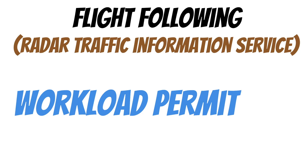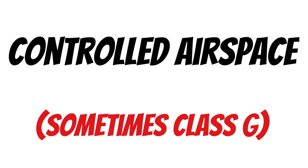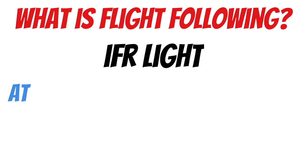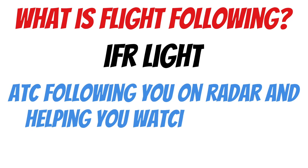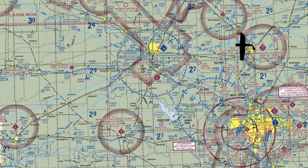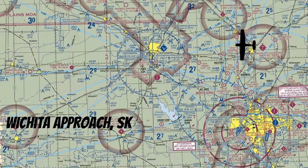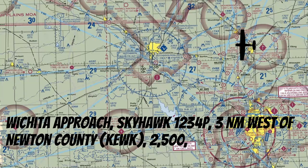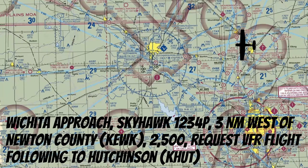You can ask for flight following any time you're in controlled airspace, and sometimes Class Golf, as long as they can see you on radar. All it is is ATC following you on radar and helping you watch for other aircraft — I like to call it IFR light. Let's say we took off from Newton County, a small airport near Wichita. Here's what requesting VFR flight following to Hutchinson sounds like: 'Wichita Approach, Skyhawk 1-2-3-4 Papa, 3 nautical miles west of Newton County Airport, Kilo Echo Whiskey Kilo, 2500. Request VFR flight following to Hutchinson, Kilo Hotel Uniform Tango.'